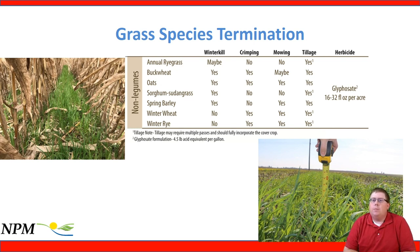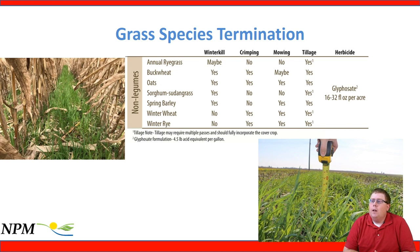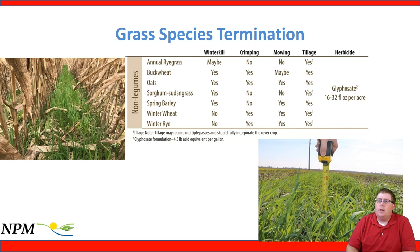Tillage is also an option but is not recommended unless needed for the crop rotation, because tillage will undo benefits of the cover crop such as reducing soil erosion and building soil health. Finally, herbicides are in the toolbox — a glyphosate burndown pass can be effective, but we want good weather conditions at termination timing.